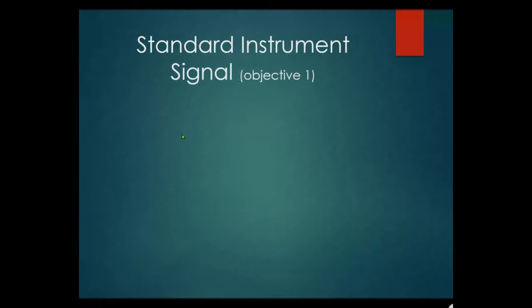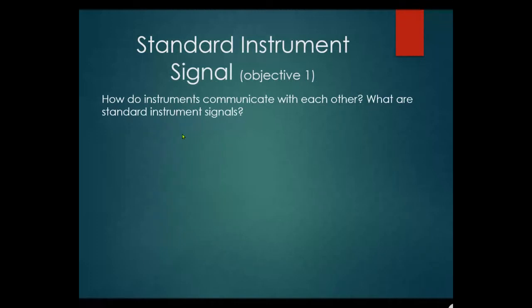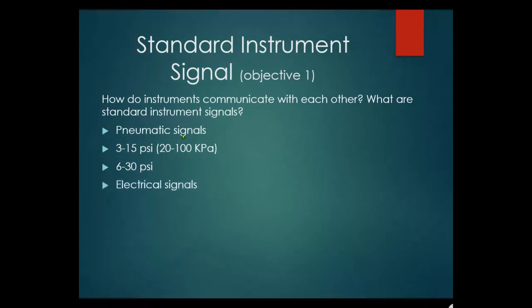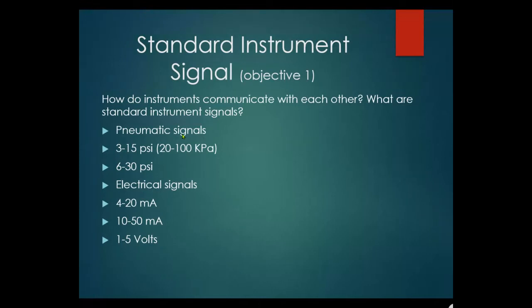Standard instrument signal transmission — how do instruments communicate with each other? The standard pneumatic signals are 3 to 15 psi or 20 to 100 kPa, most still use 3 to 15 psi. There's also 6 to 30 psi, which isn't seen much. The electrical signals are 4 to 20 milliamps, and also 10 to 50 milliamps (rarely seen), and 1 to 5 volts, which comes from your 250 ohm resistor.